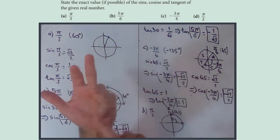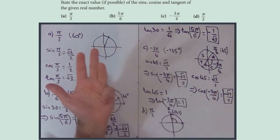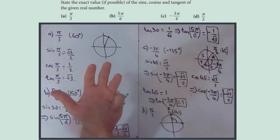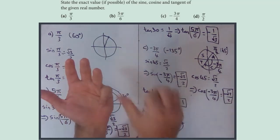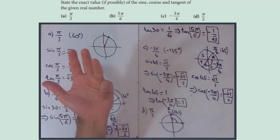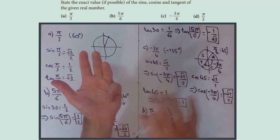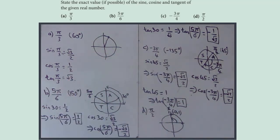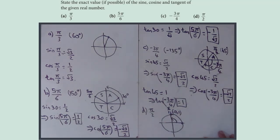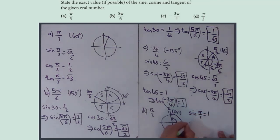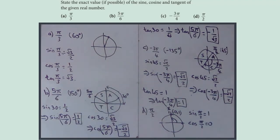You can use the hand — 0, 30, 45, 60, 90 — put the 90 finger down: sin(90°) = √4/2 = 1, cos(90°) = √0/2 = 0. On the unit circle, the x-coordinate is cosine and the y-coordinate is sine, so cos(π/2) = 0 and sin(π/2) = 1.